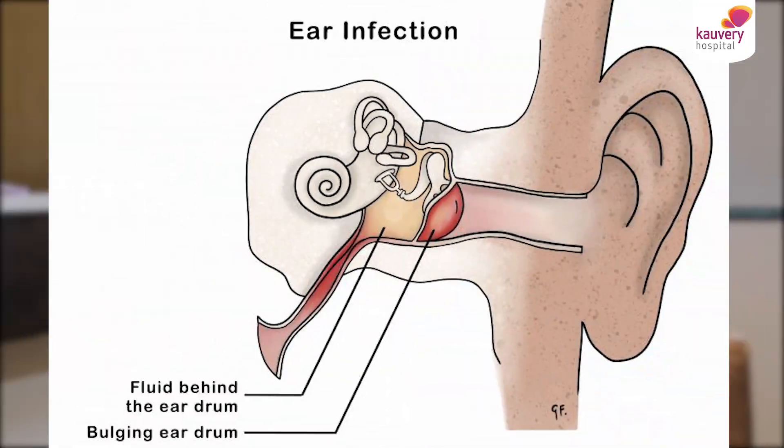An ear infection may affect the ear drum, and because of this there could be some pus collection in the middle ear, affecting the conduction of sound. If this infection is not treated properly, it may lead to perforation of the ear drum, causing hearing loss — a permanent hearing loss.